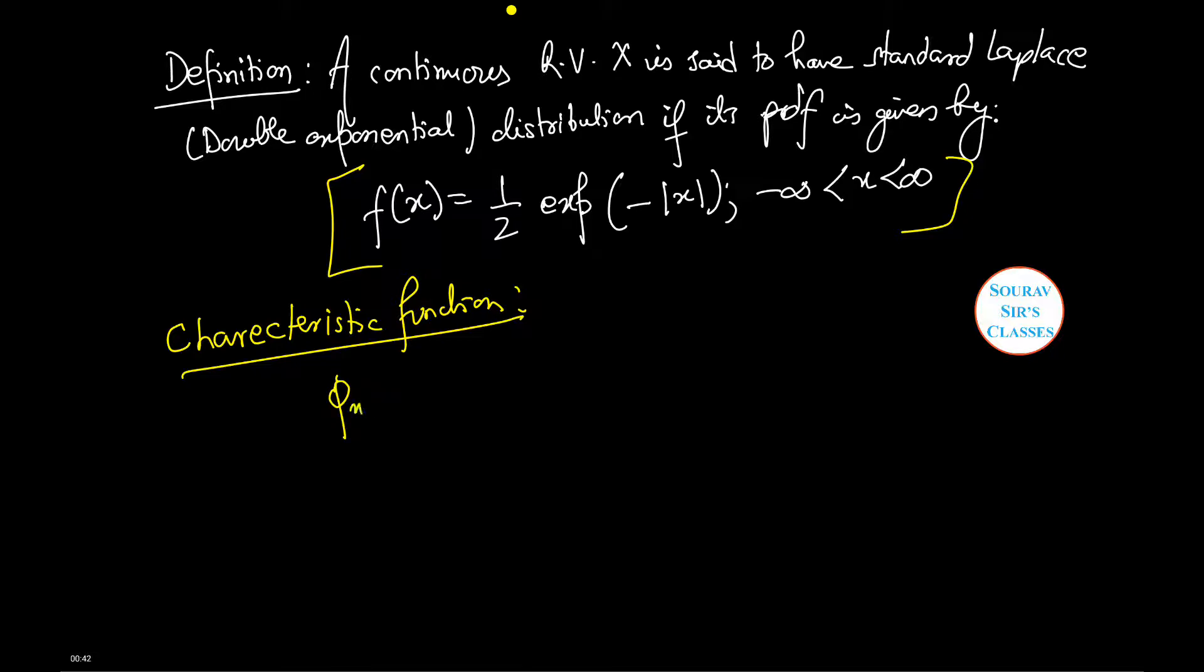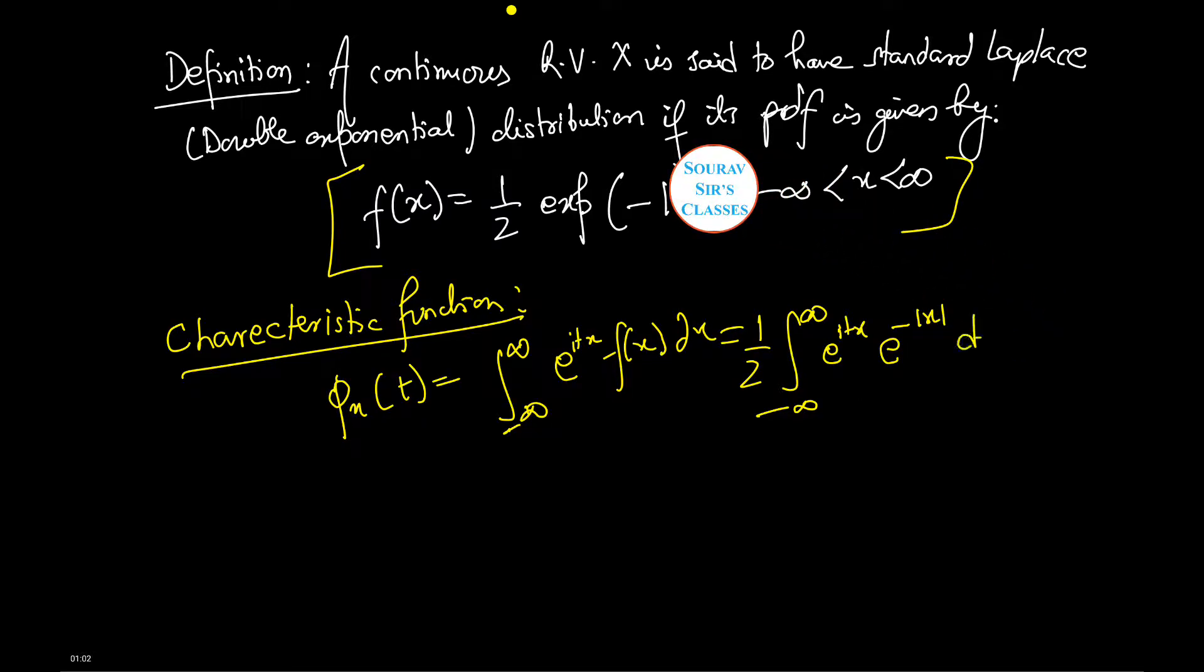Psi_X(t) is equal to integration of minus infinity to infinity e to power itx f(x) dx, which is equal to half integration of minus infinity to infinity e to power itx e to power minus mod x dx. That is equal to half integration of minus infinity to infinity cos(tx) into e to power minus mod x dx plus i integration of minus infinity to infinity sin(tx) e to power minus mod x dx.